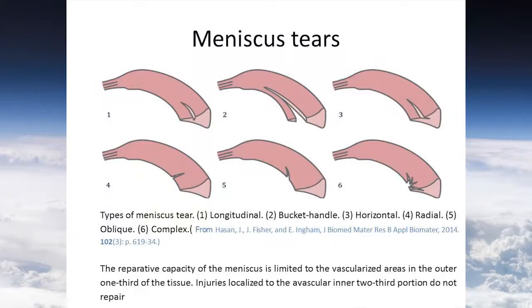The lack of blood supply to the inner region of the meniscus is the primary cause of the non-healing properties of the meniscus. There are six types of meniscus tears based on different morphology: longitudinal, bucket handle, horizontal, radial, oblique, and complex meniscus tears.